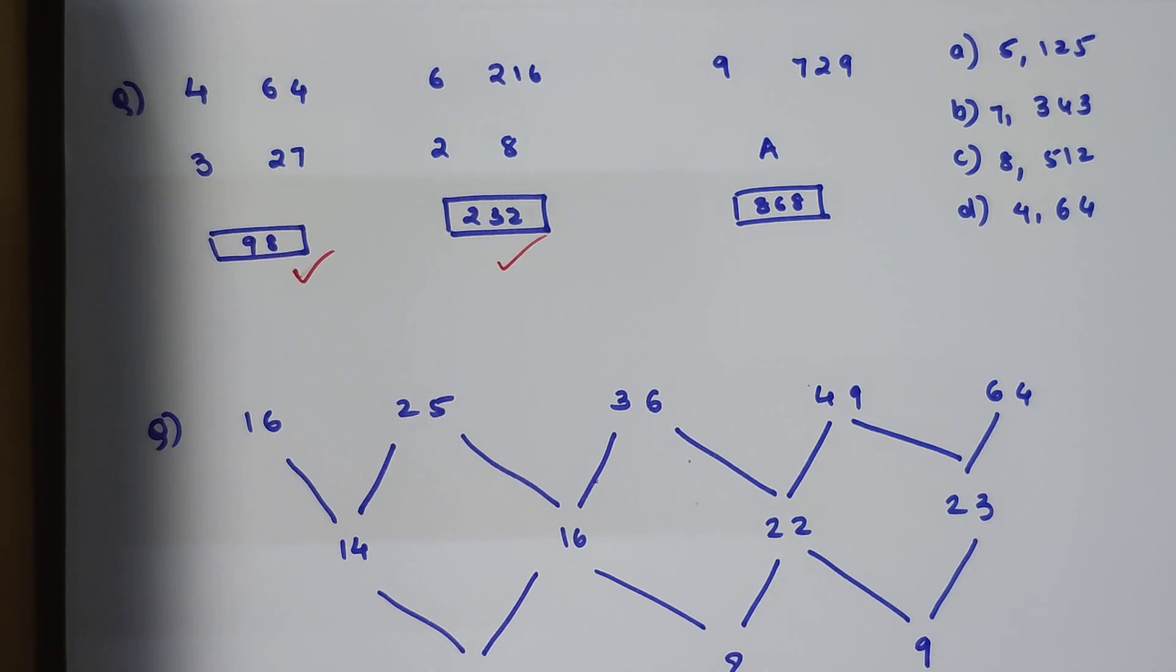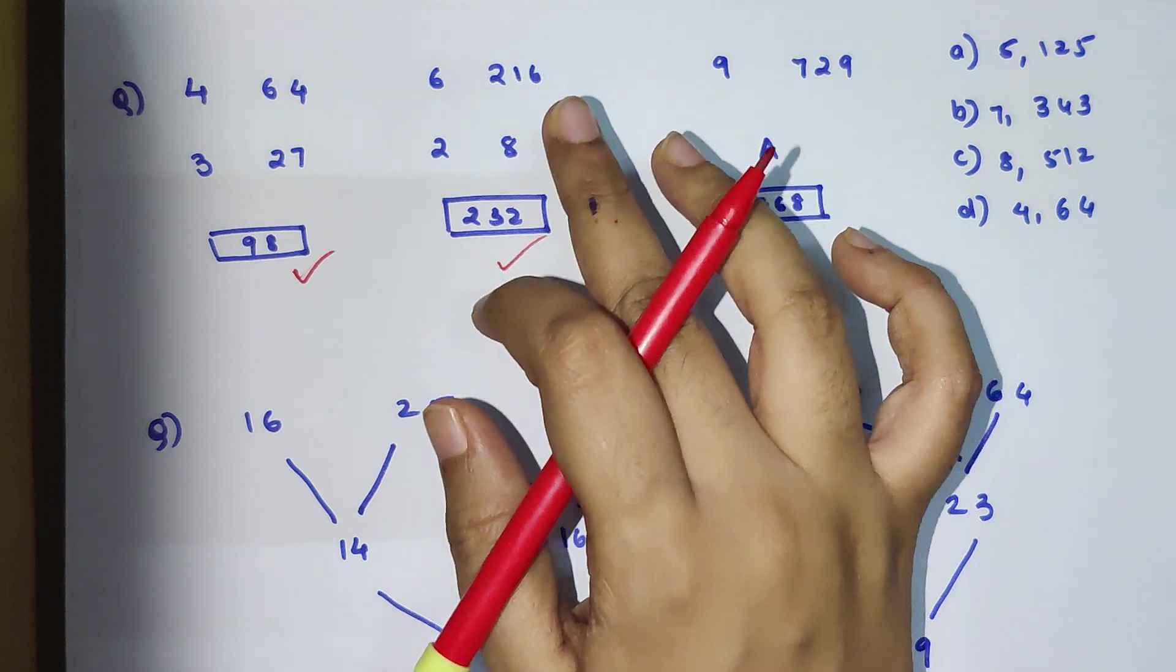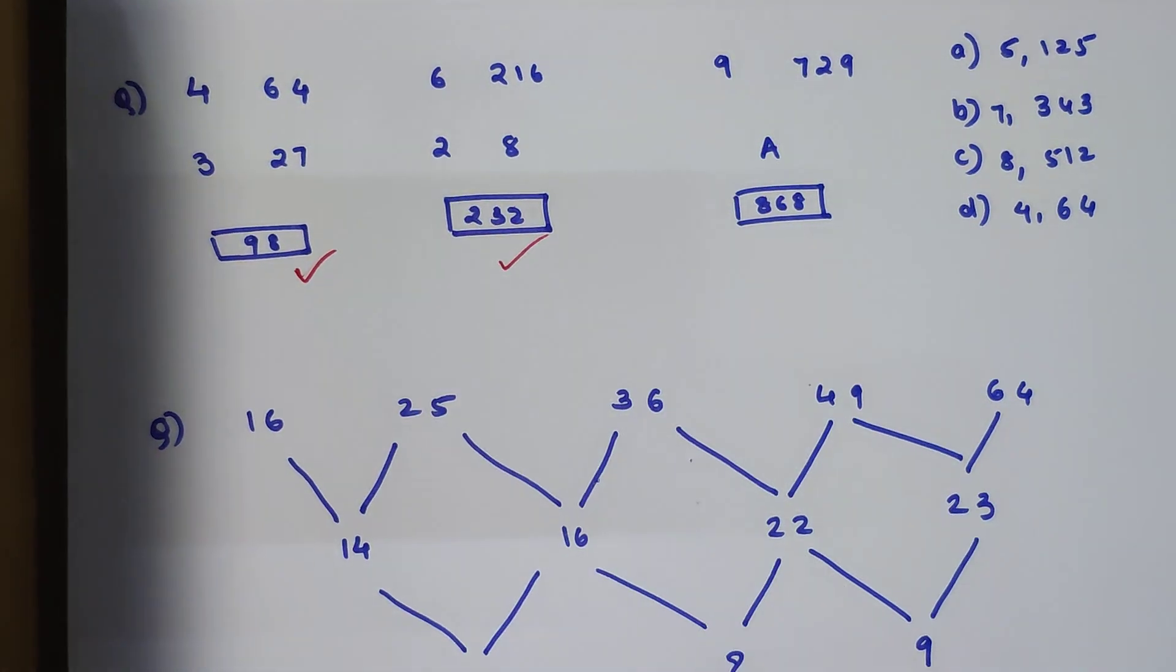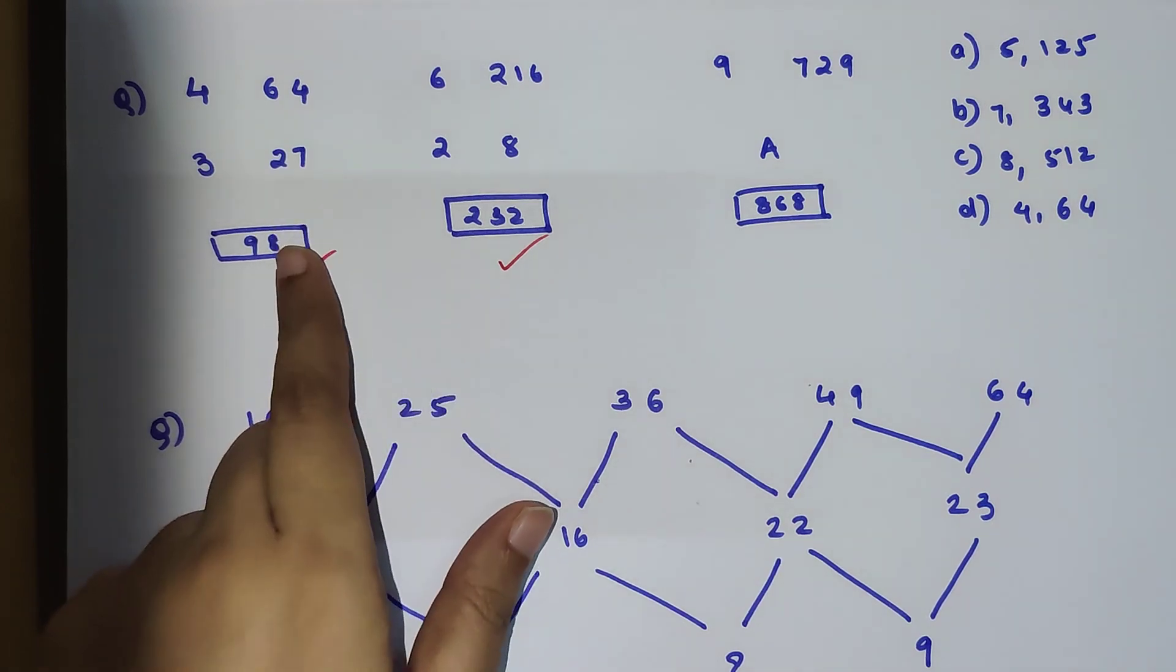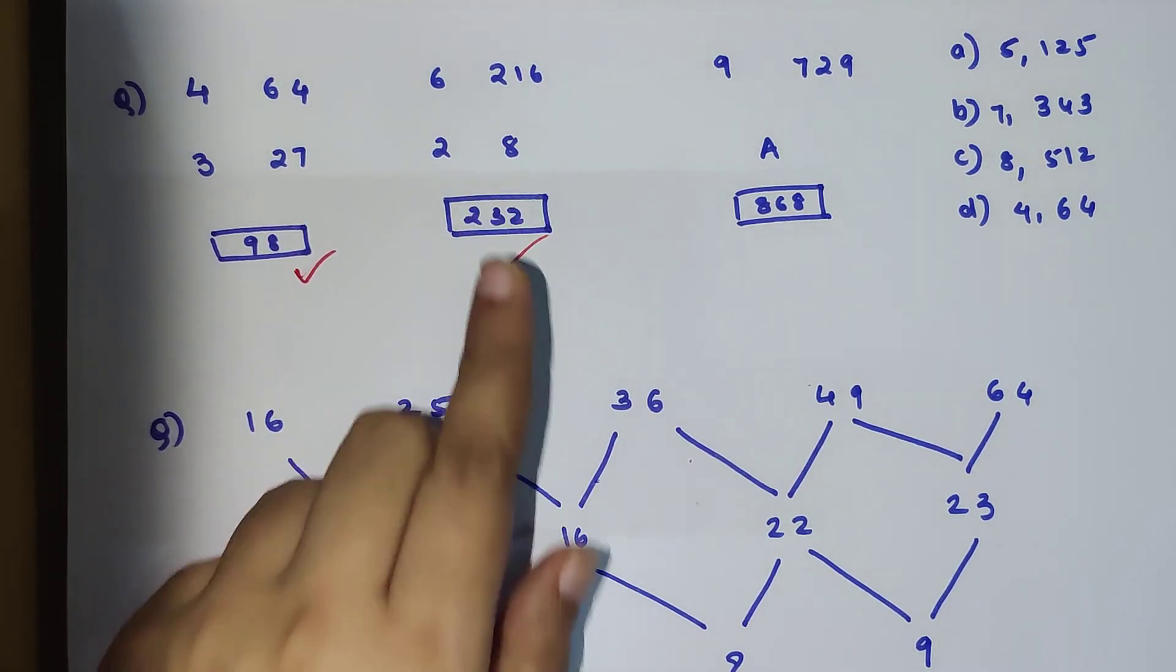6 plus 216 is going to get you 222, plus 2 plus 8 is going to get you 10, so 222 plus 10 will get you 232. So that's correct. Now please understand, whenever you find the pattern, do not ever skip the middle one. If they have given you three sets, then please check whether whatever pattern you are getting for the first one is applying for the second one as well.